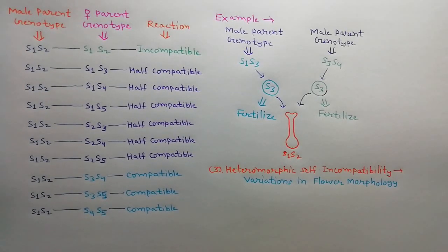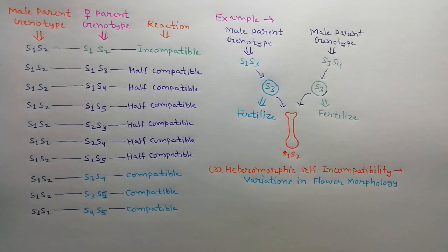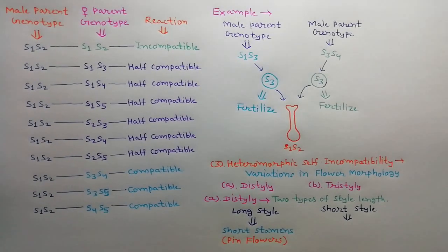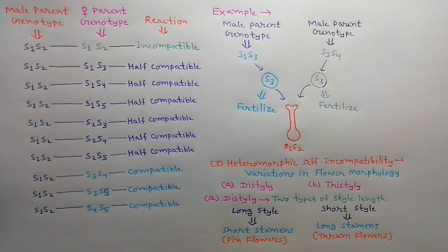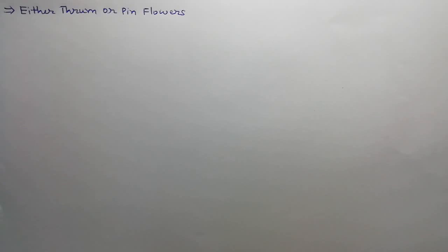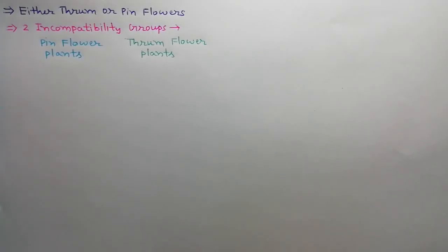Next, we discuss heteromorphic self incompatibility, where flowers of plants show variations in morphology — specifically, the length of style and stamen is different. It is divided into two types: distyly and tristyly. In distyly, styles show two types of length: long style and short style. Long style flowers have short stamens and are called pin flowers, while short style flowers have long stamens and are called thrum flowers. A plant either has only pin flowers or only thrum flowers, giving two incompatibility groups.